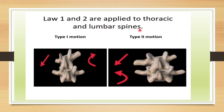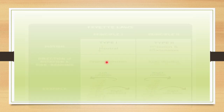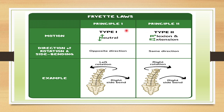The First and Second Laws are only applicable for the thoracic and lumbar spines. The Third Law, put forward by Nelson in 1948, is applicable for all spinal levels including the cervical spine. To summarize Laws 1 and 2: in neutral position, rotation occurs in the opposite direction to side flexion; in a non-neutral position (flexion or extension), rotation and lateral flexion occur in the same direction.